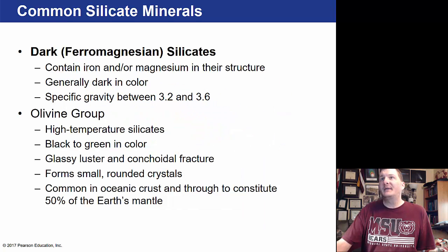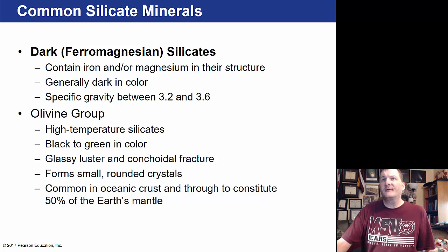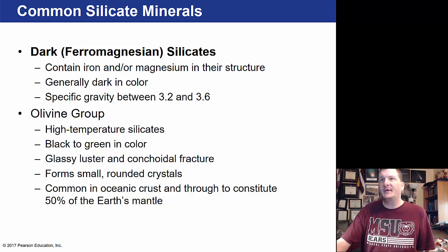The dark or ferro-magnesium silicates contain iron and/or magnesium in their structure. They are generally dark, with a high specific gravity meaning they would sink in water. This group has a high-temperature silicate with a glassy luster, forms small round crystals, is found in the oceanic crust, and is thought to constitute 50% of the earth's mantle, forming as hot magma cools.